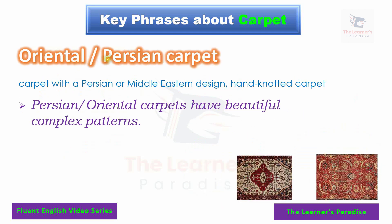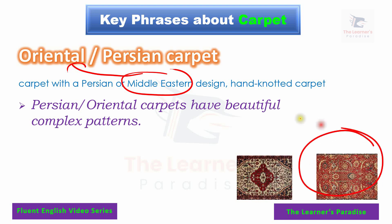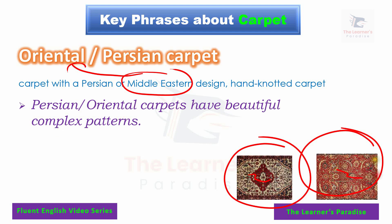Next, we have Oriental or Persian carpet. Oriental loosely refers to anything related to the Middle East, so an Oriental carpet has some design from the Middle East. A Persian carpet is any carpet famous for designs that relate to Iran. Example sentence: Persian or Oriental carpets have beautiful, complex patterns.